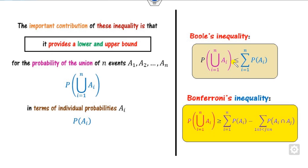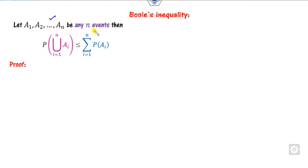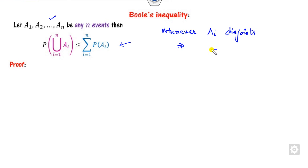The relation between the probability of the union and the sum of individual probabilities is stated by Boole's inequality. Boole's inequality gives you the lower bound — you can see it uses a less-than-or-equal-to sign. It states that for any events A_i, not necessarily disjoint, the probability of their union is less than or equal to the sum of individual probabilities. Equality holds when the A_i's are disjoint.